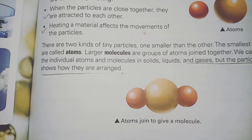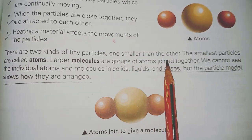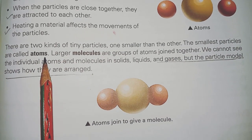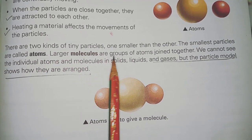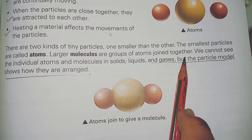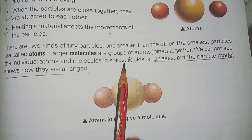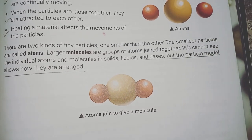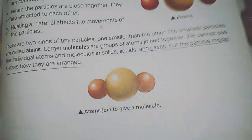There are two kinds of tiny particles — one smaller than the other. The smaller ones are called atoms, and larger molecules are groups of atoms joined together. We cannot see individual atoms or molecules in solids, liquids, or gases, but the particle model shows how they are arranged together.